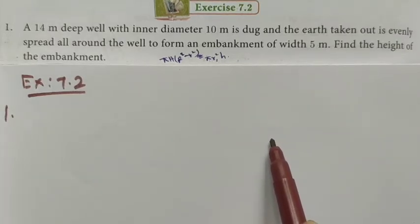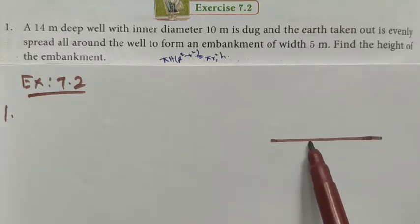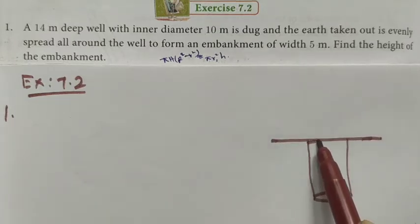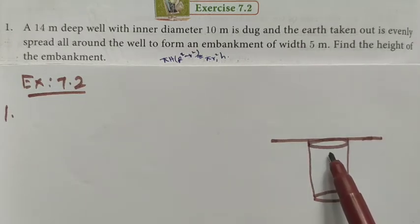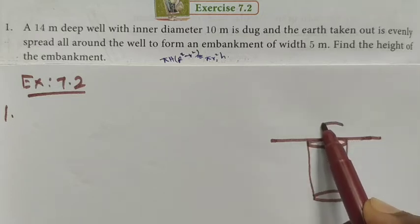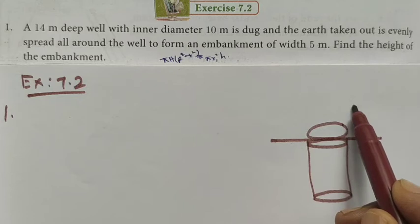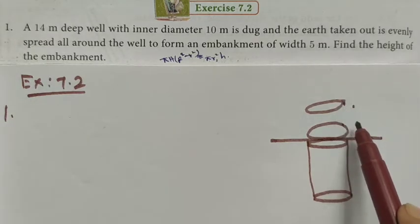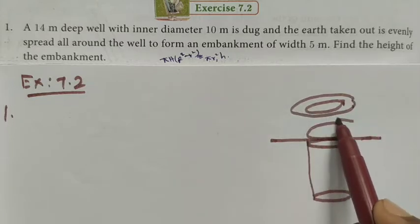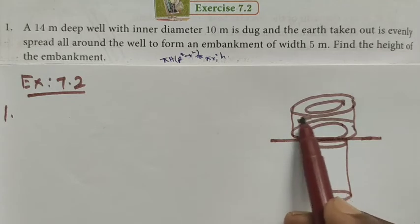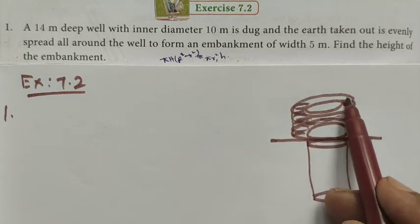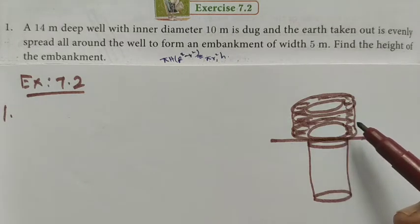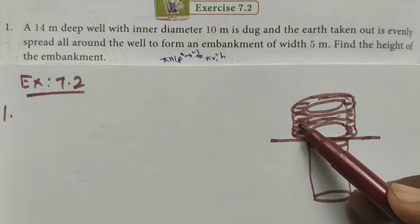Imagine this is the ground — the well is dug here. The well will be cylindrical in shape. The dug-out earth should be spread in the path of the embankment, like this. It will be spread here to form the embankment.